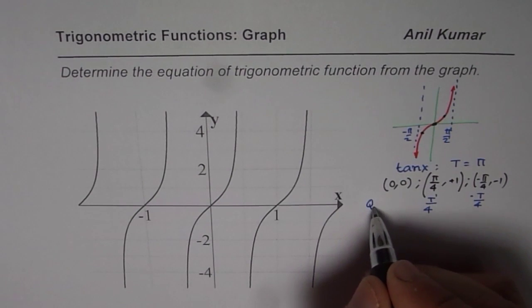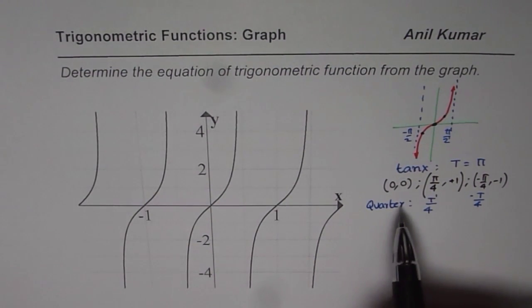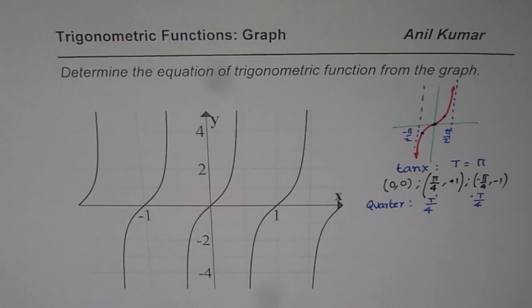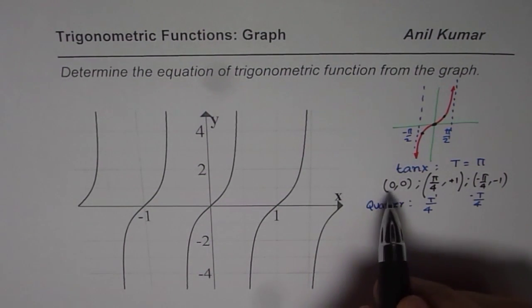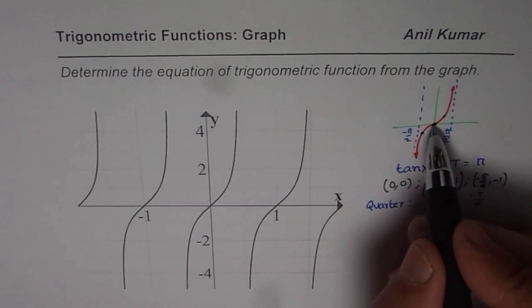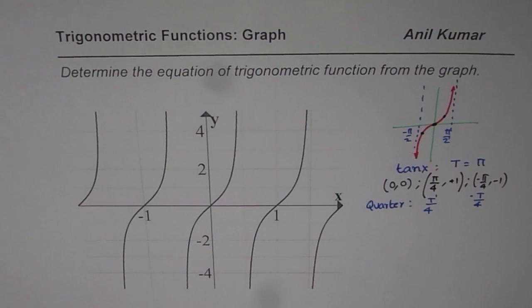So the critical points are actually on the quarter of the cycle, do you understand that? So these are at the quarter cycle. So at the quarter of a cycle it is 1 or minus 1, and at origin where it turns, it is always origin. So these points are the points which we will consider to get the equation for the tan function.